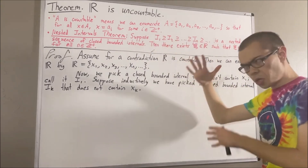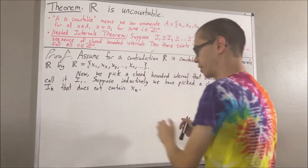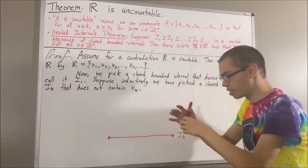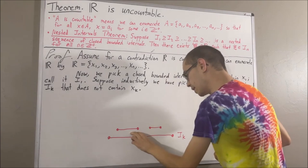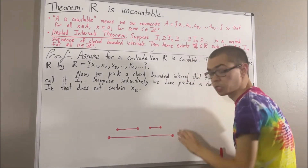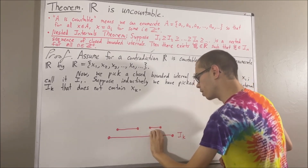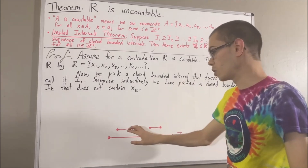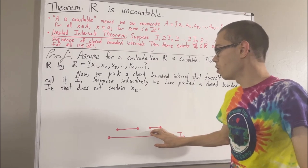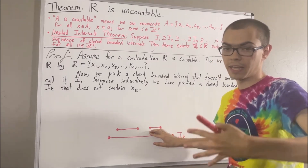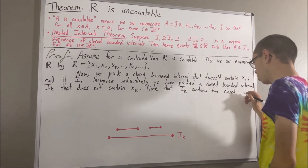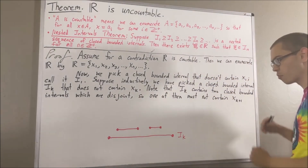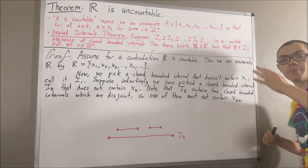So visually, I_k looks something like this. As you can imagine, I_k contains at least two closed subintervals which are disjoint. For example, these are two closed subintervals of I_k which are disjoint — in other words, these two closed intervals do not share any elements in common. So there's no way that x_{k+1} could be an element of both of these closed intervals. One of these closed intervals must not contain x_{k+1}.